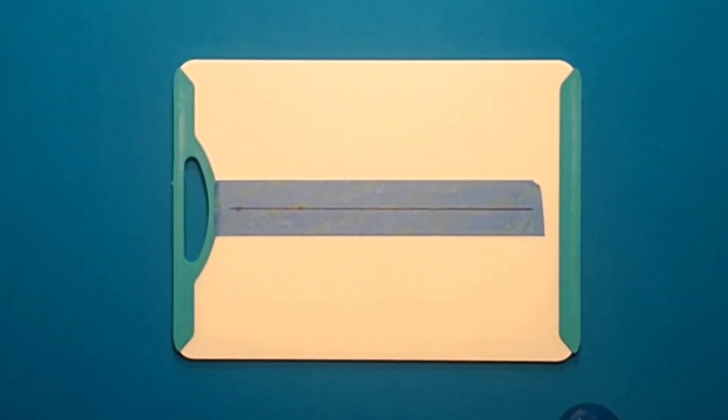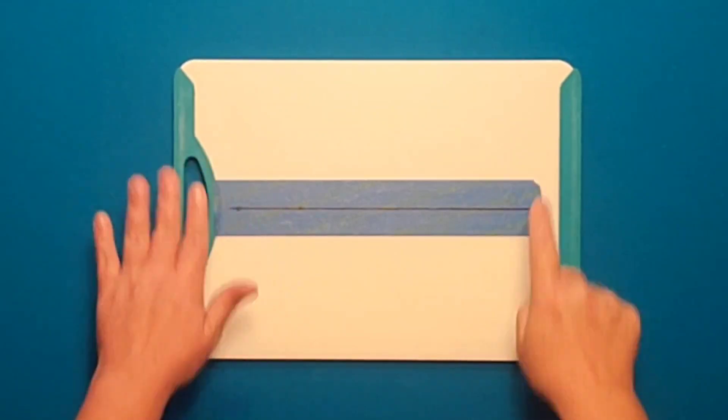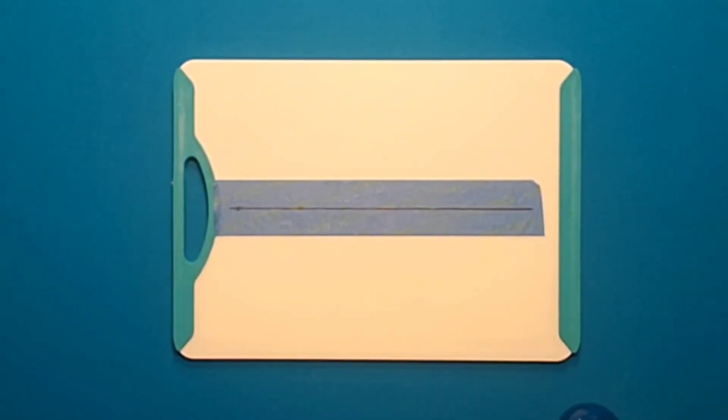When you're ready to make your aiming aid, put a piece of tape down on an appropriate surface. Then you're going to want to draw a line down the center of the tape using your black Sharpie.